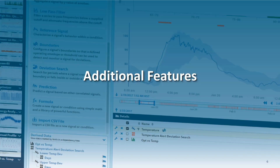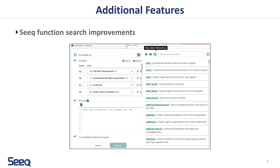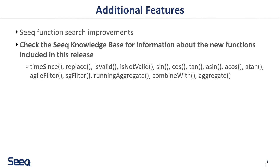R21 includes several smaller changes intended to improve the SEEK user experience. A full list of SEEK functions is now available to review in addition to previous search functionality. The function search has been updated to improve search result priority. We've also added a few functions in this release — to see a complete list and descriptions, please check out the SEEK Knowledge Base article.